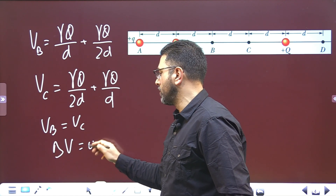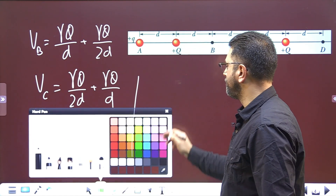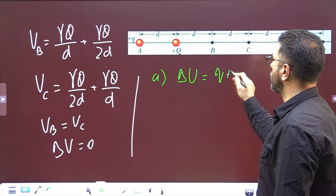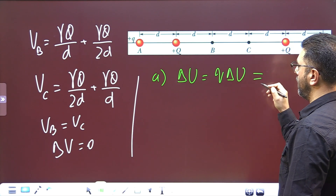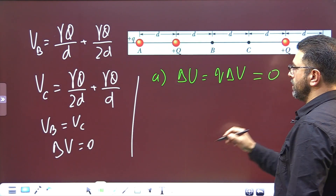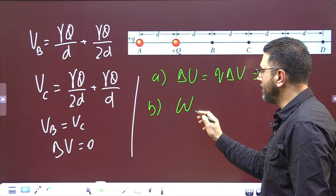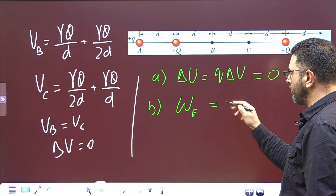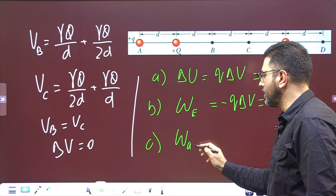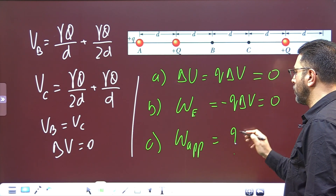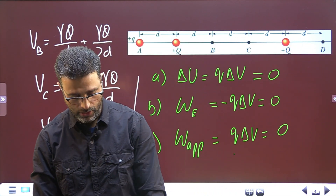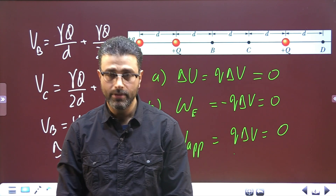VB equals VC, which means delta V equals zero. If delta V is zero, then change in potential energy, which is Q times delta V, is also zero. Work done by the field, which is minus Q times delta V, is also zero. Work done by external agency, Q times delta V, is also zero. All three are again zero — that's what we were asked to find out.